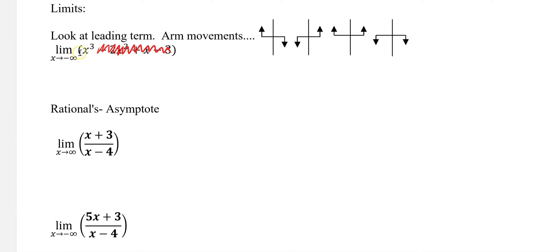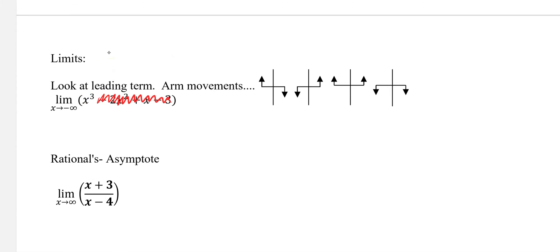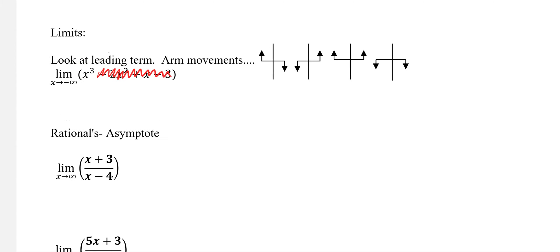What is the end behavior of this function? When you read a limit, it's saying: what is the function basically approaching as X approaches this value?